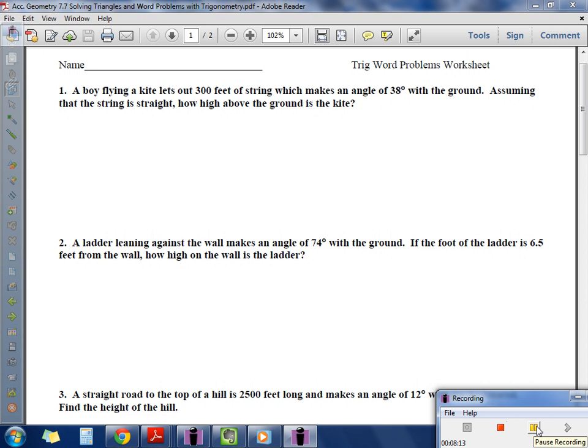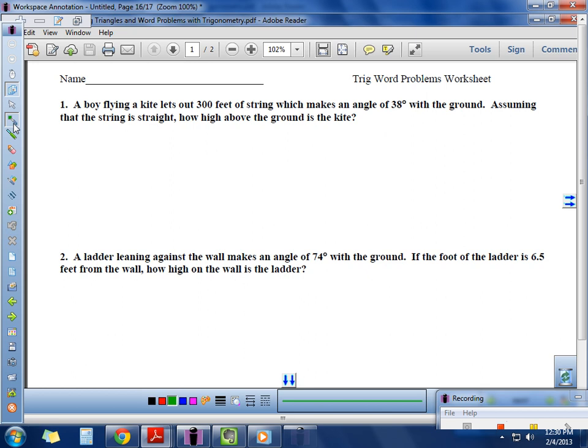The last thing we need to be able to do is some word problems. So here's something to practice. This first one says, a boy is flying a kite and lets out 300 feet of string, which makes an angle of 38 degrees with the ground. Assuming that the string is straight, how high above the ground is the kite? So what you need to be able to do is draw a picture. So here's a good start. A boy is flying a kite and lets out 300 feet. We'll just say the boy is down here. So he's down here. He's flying a kite. He lets out 300 feet of string to fly his kite. It makes a 38 degree angle with the ground. Remember, this is in feet. This is in degrees. Assuming that the string is straight, how high above the ground is the kite? So this is a picture that you should be able to generate from those sentences given. And then you should be able to solve for h. Go ahead and try that.